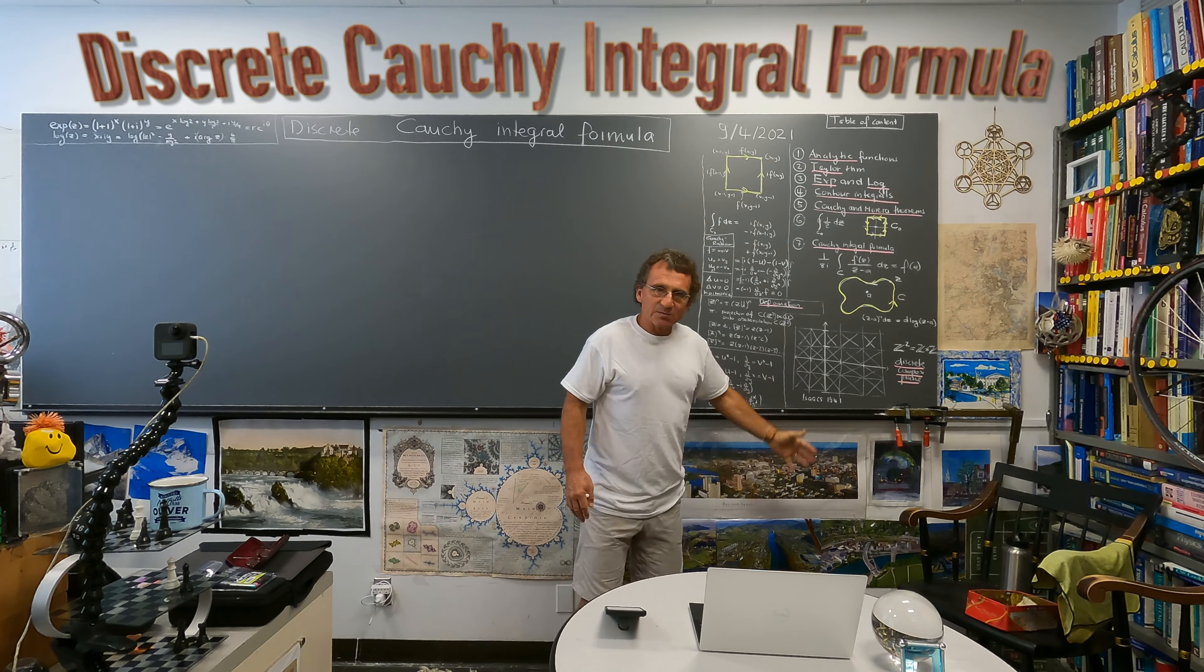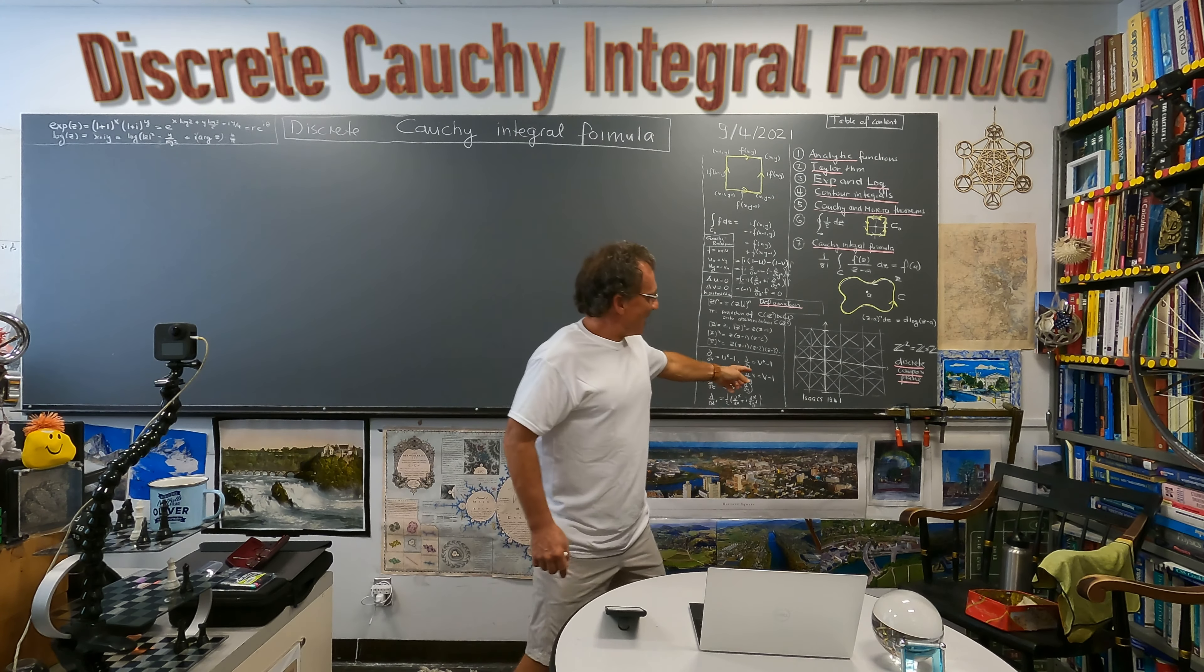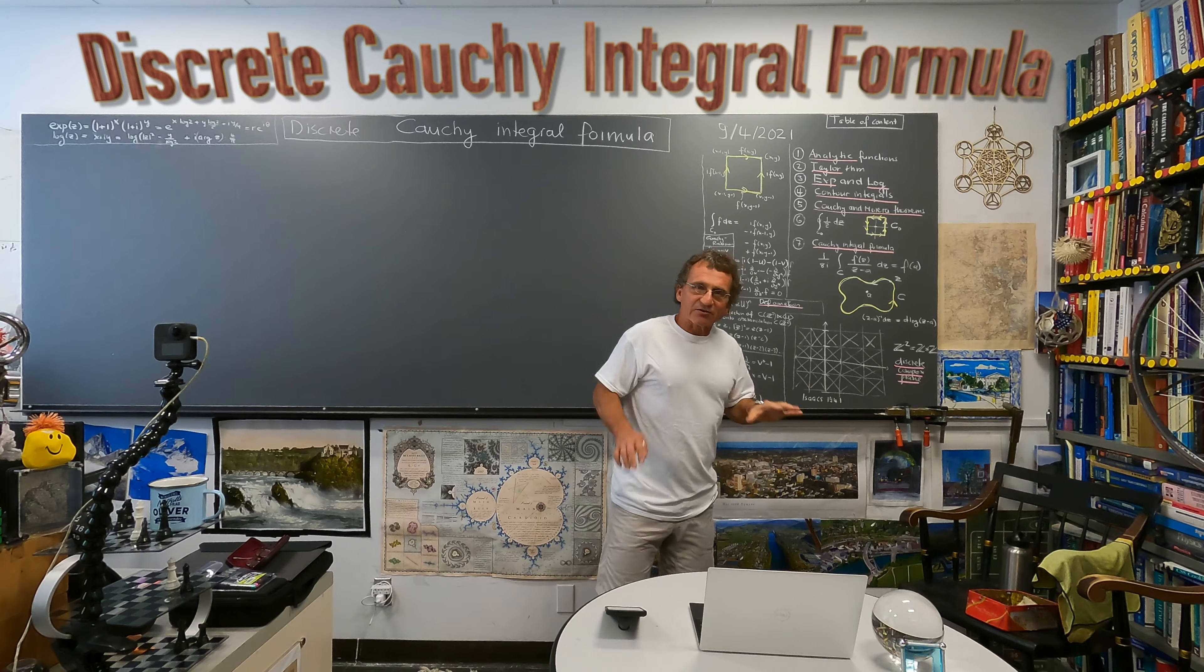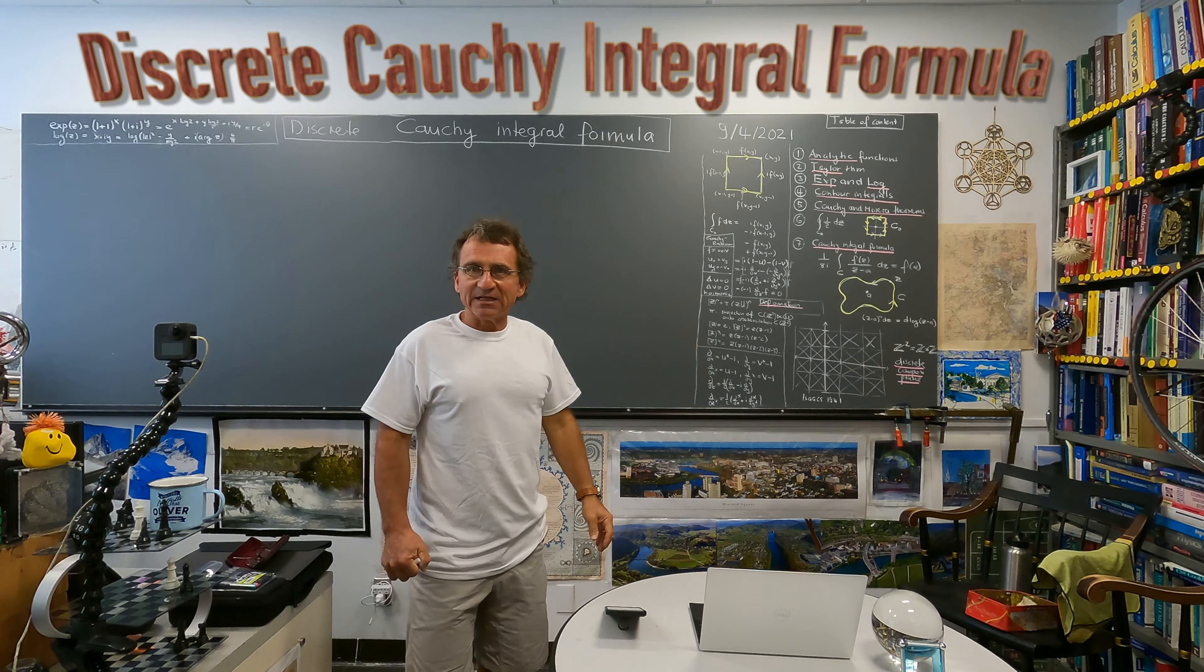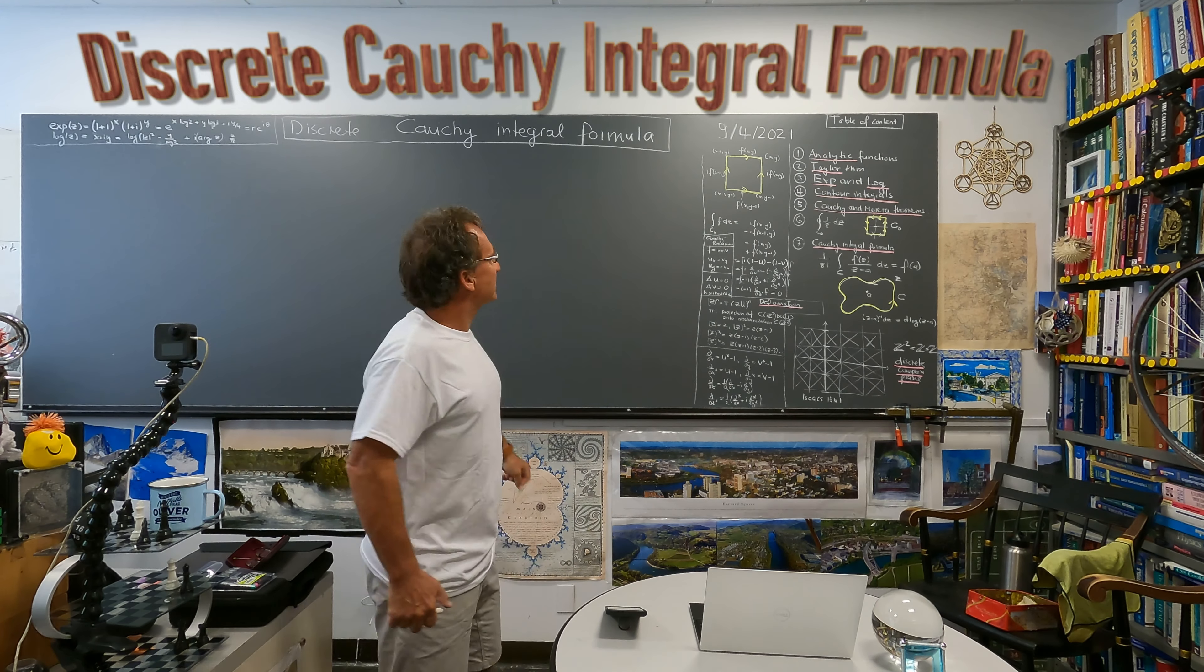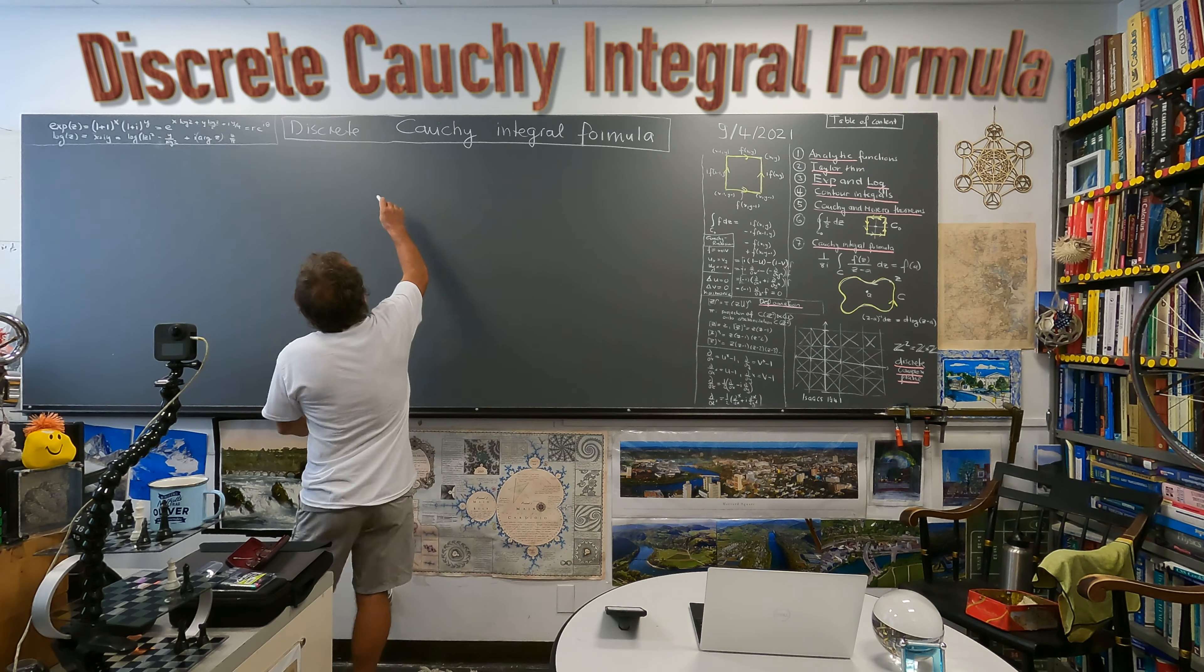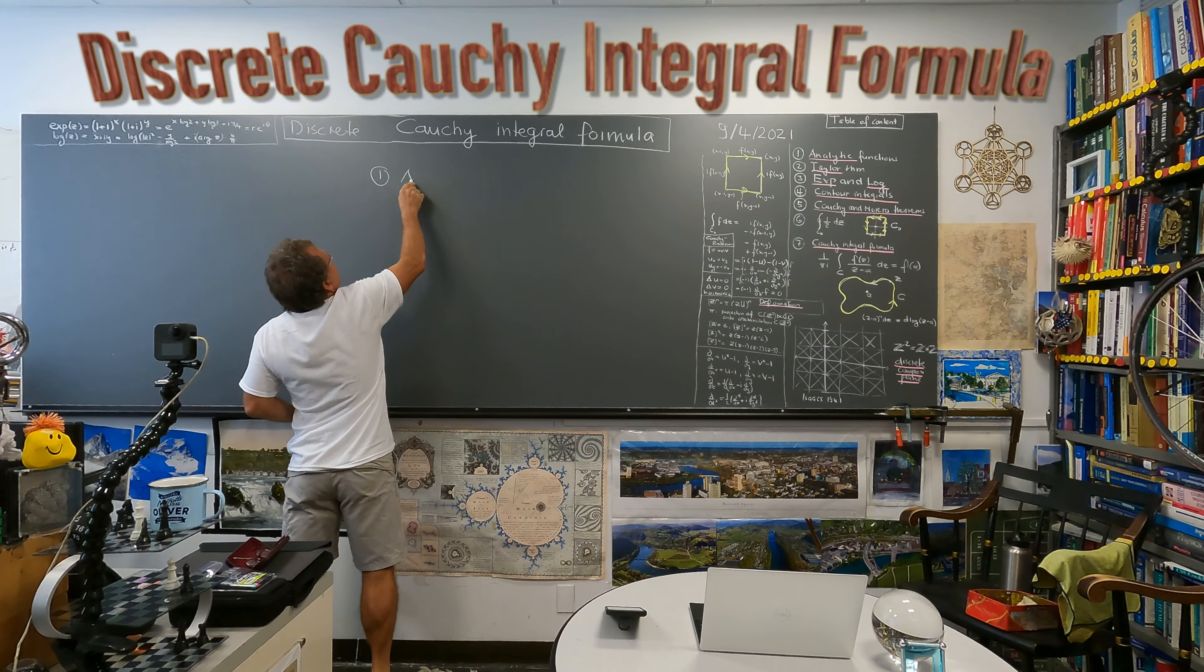So first of all we have seen the discrete complex plane which is made of the discrete lattice, Z2 lattice. We have the notion of analytic functions which is a discrete version, so that's the first thing I want to talk about, analytic functions.